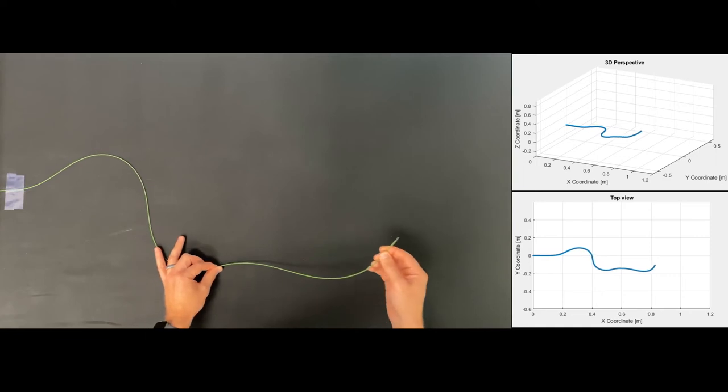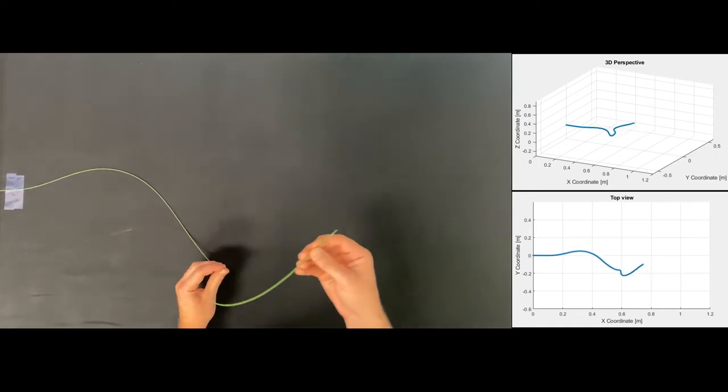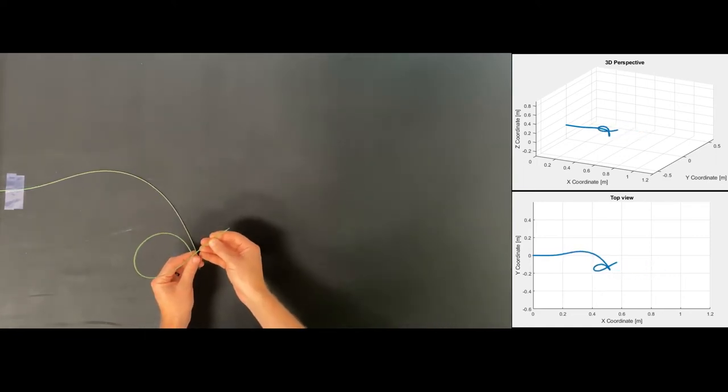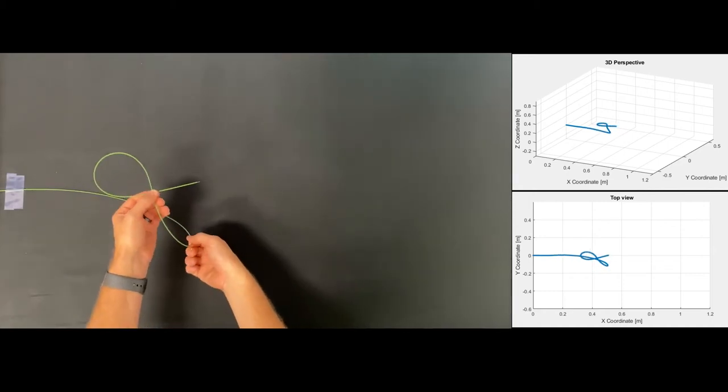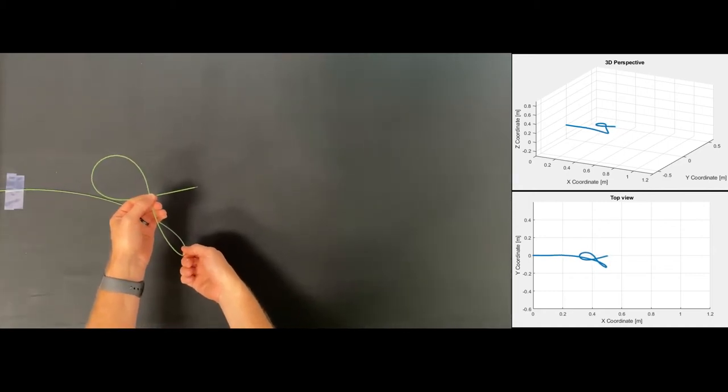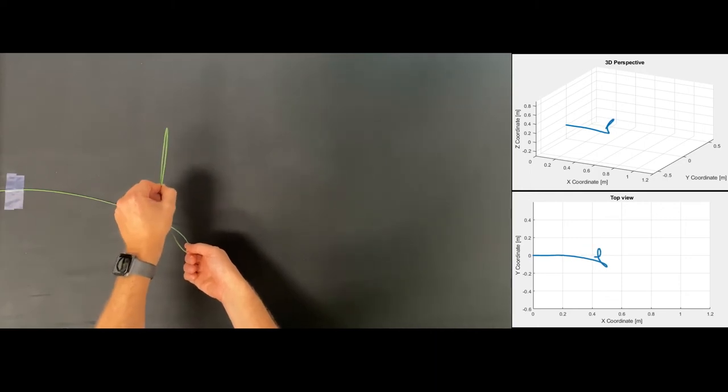This video demonstrates a variety of generic shapes and movements which can be visualized with the Shape Sensing Company's unique technology. The sensor is approximately 115 centimeters in length and is sleeved in green tubing simply for ease of visualization.